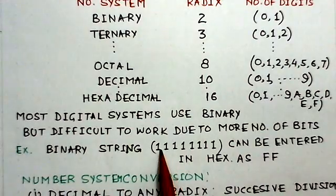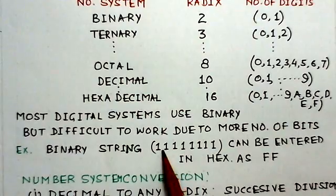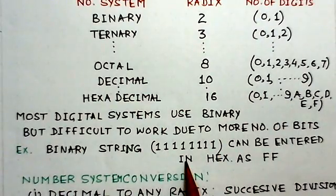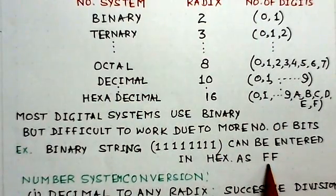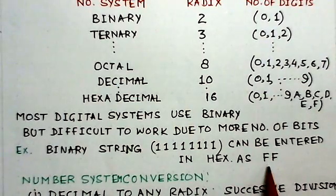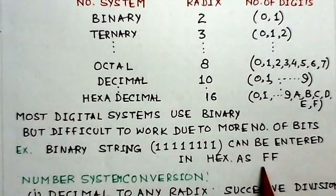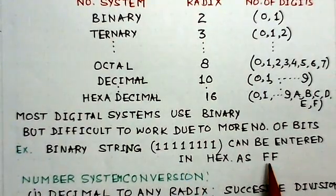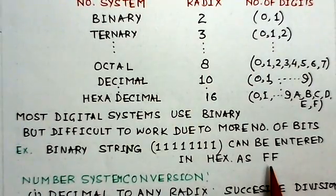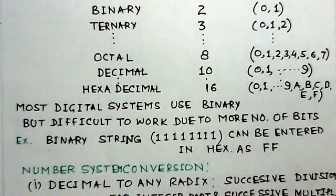For example, a binary string of eight ones — eight bits — can be represented as just two digits 'FF' in hexadecimal. By using such coding, we can represent long binary strings in a shorter form. Otherwise, entering long binary data could take very long and could also lead to mistakes.